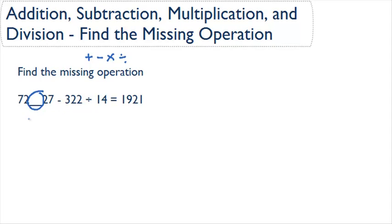Now, looking at our equation, we can see that we have 72, some operation 27, minus 322 divided by 14, is going to equal 1,921. If we want to figure out what this blank is, we want to simplify and get rid of as much of the rest of the numbers and operations on this side as possible.